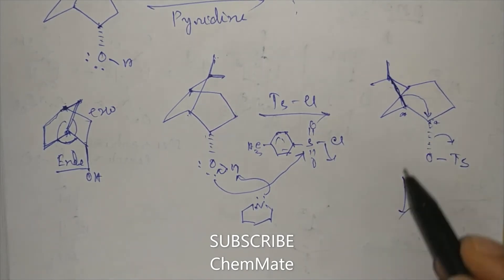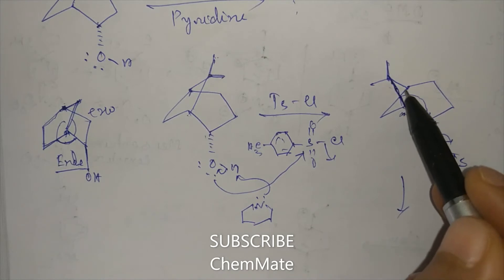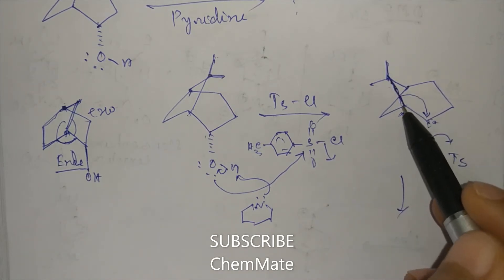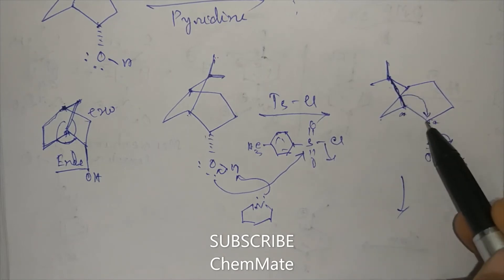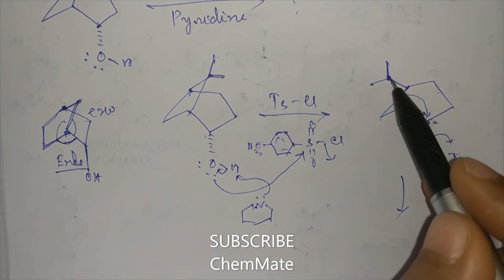So here this one migrates from this carbon to this carbon, and this OTs group will eliminate. So now it was a four-member ring, one, two, three, four. If it migrates here, then it will be a five-member ring.